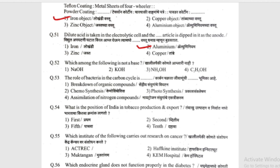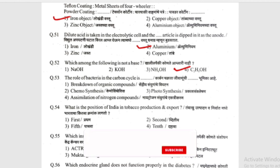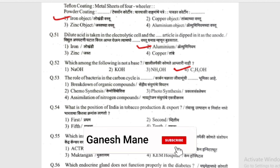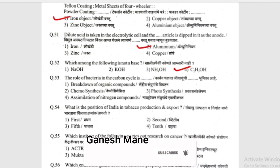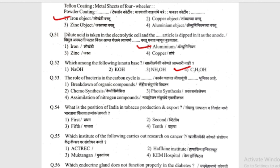Which among the following is not a base? (Khali peki konti amlaari nahi?) Options: NaOH, KOH, NH4OH, C2H5OH. The answer is C2H5OH — it is not a base. NaOH (sodium hydroxide), KOH (potassium hydroxide), and NH4OH (ammonium hydroxide) are all bases.